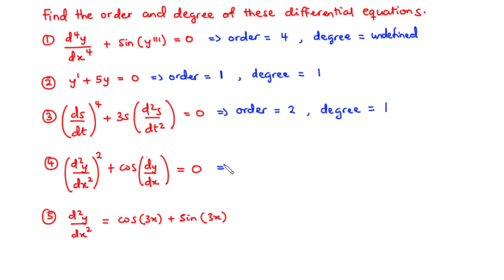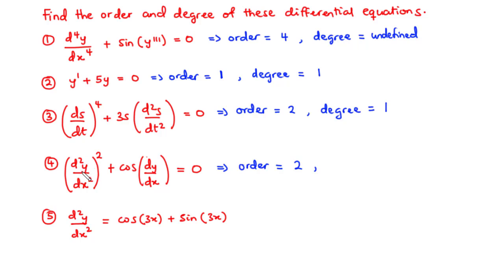Now to the fourth example. To find the order, we have two derivatives — the second derivative and the first derivative. The second derivative is the highest, so the order is 2. Just to clarify: when finding the order, you focus only on the derivative itself, not any exponent outside of it. So the second derivative is the highest order derivative, giving an order of 2.